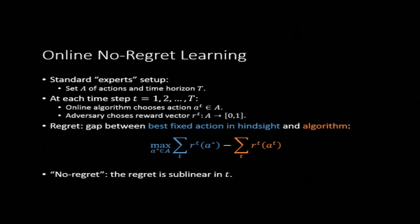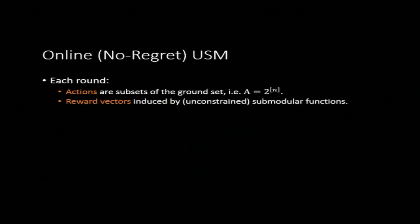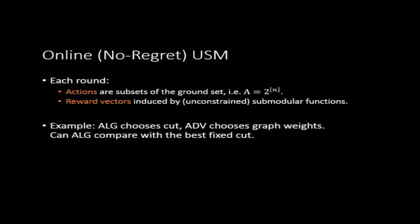All right. So what does our USM problem look like in this no regret model? Of course, there's the online USM problem, which is what this talk is about. In each round, the actions that our algorithm is going to be choosing from is going to be a subset of the ground set. So you can choose elements two, four, and five, say. And the reward vectors - the adversary can't pick arbitrary reward vectors, the reward vector has to correspond to a submodular function. Just flashing back to our cut example earlier in this talk, if the adversary can only pick cut functions, then this is like the algorithm is given a graph on n nodes, it chooses a cut of the graph every day, and then the adversary chooses weights for all the edges in the graph. And the question is, can the algorithm do well compared to the best fixed cut in the graph it could have chosen?